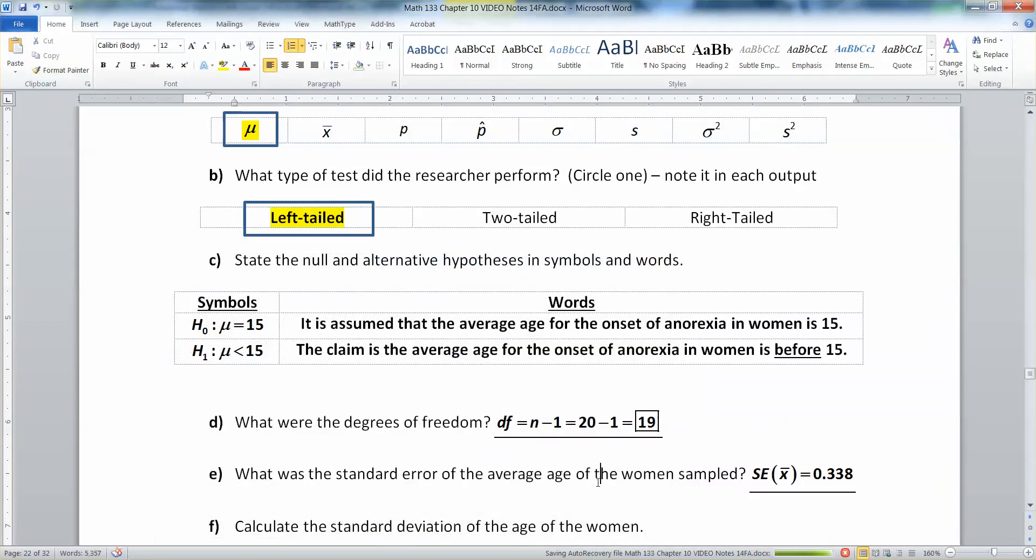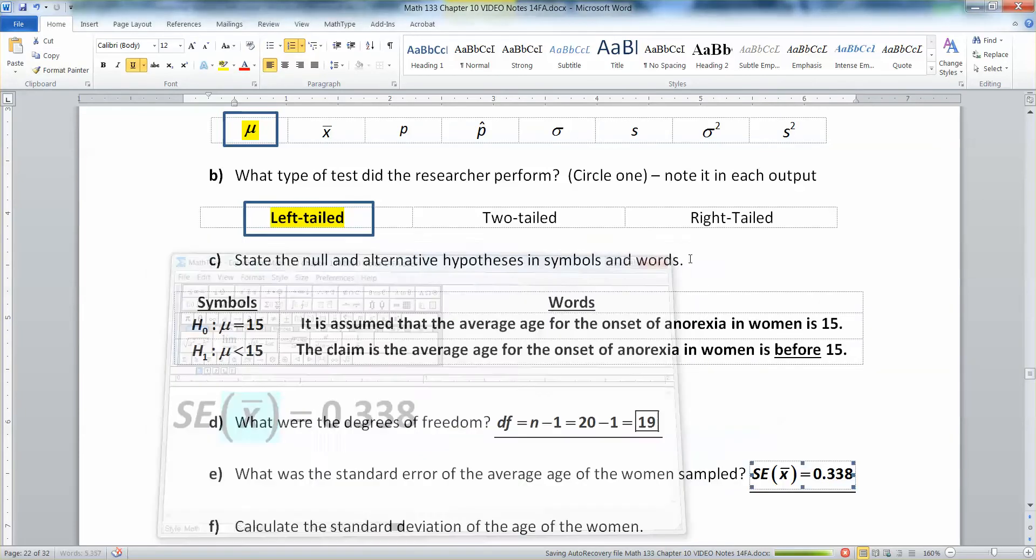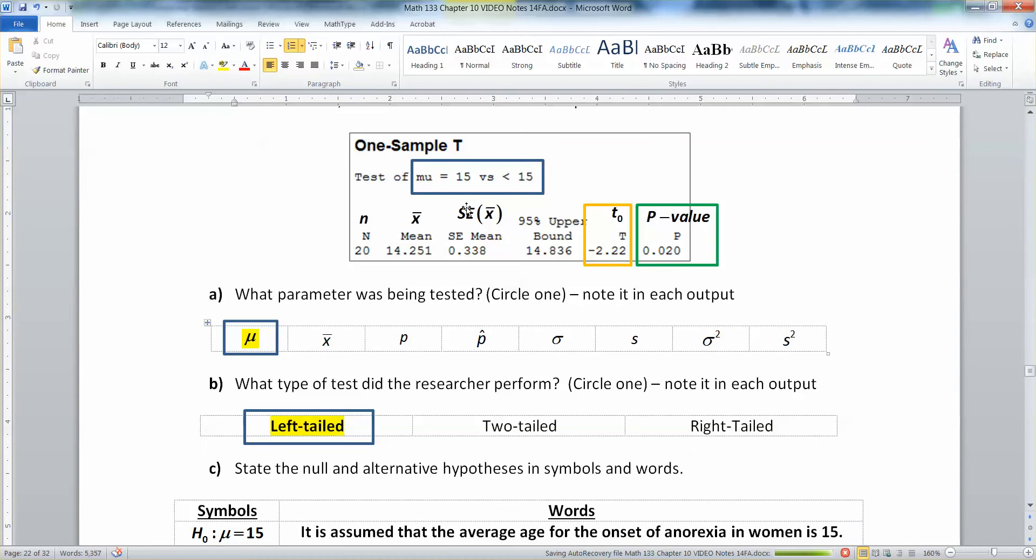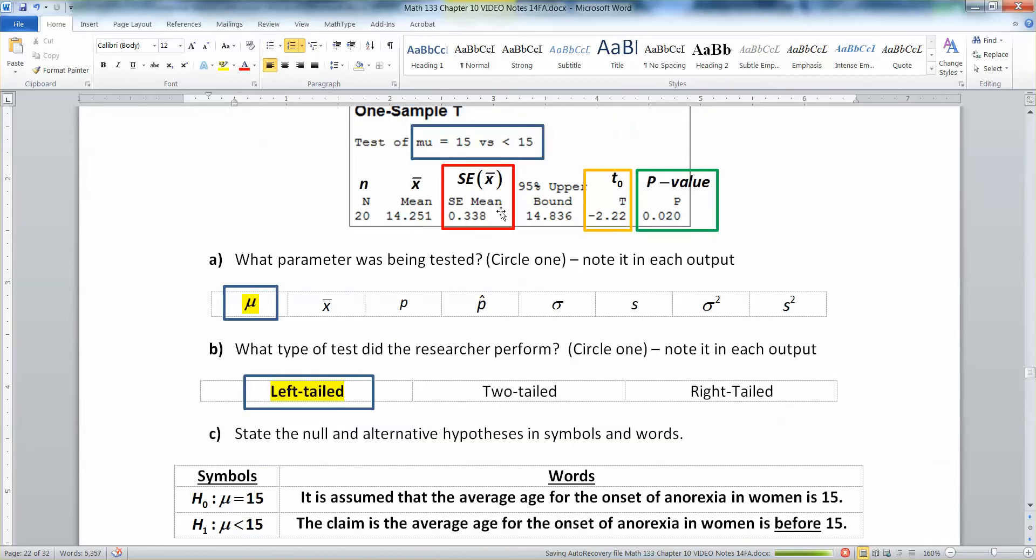All right now the standard error for the average age of the women sampled. Standard error for the average, that's the standard error for the mean for x bar. So let's take the standard error. That's right here. That's 0.338. Then I just boxed that in red so you could see it's right up here. Standard error of the mean. So that's SE of your x bar. And by the way, the mean is your x bar right there.